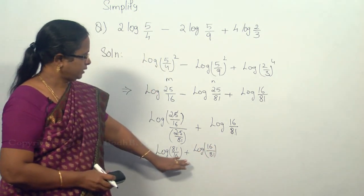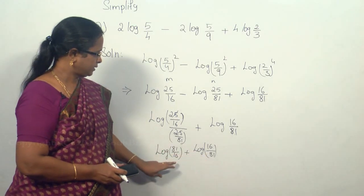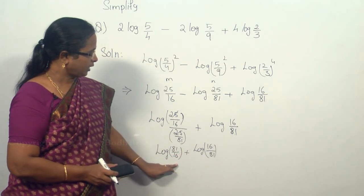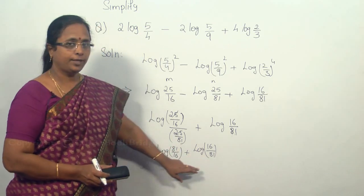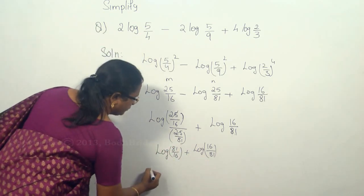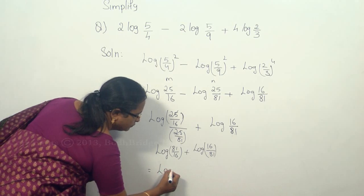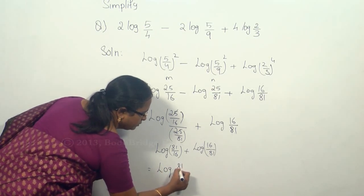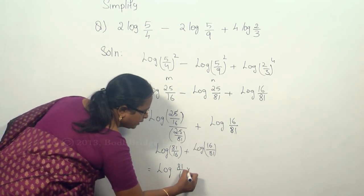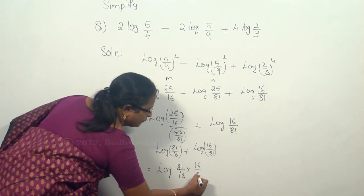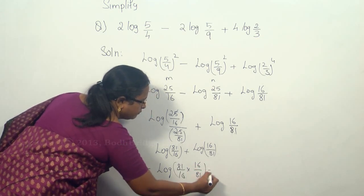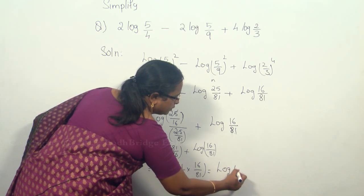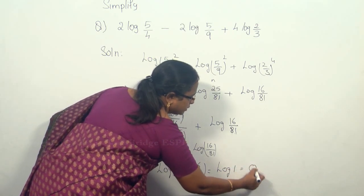So here we can see that this is a plus sign, therefore this is considered as log m plus log n which is equal to log of mn. So this can be written as log of 81/16 times 16/81 which is equal to log 1, and log 1 equal to 0.